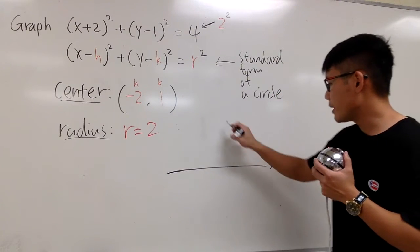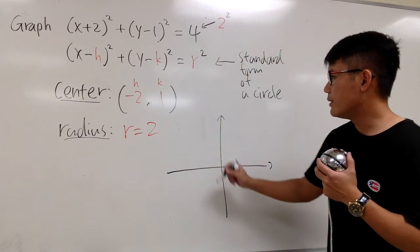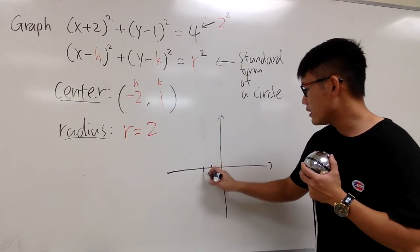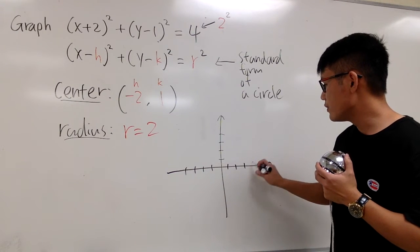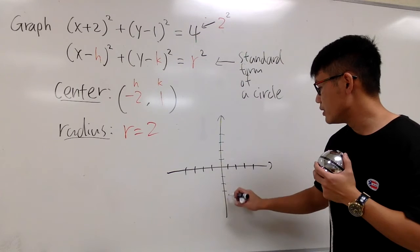So, I'm just going to draw a graph paper right here real quick. And we have negative 1, negative 2, negative 3, negative 4, and 1, 2, 3, 4, something like this. 1, 2, 3, 4. 1, 2, 3, 4.